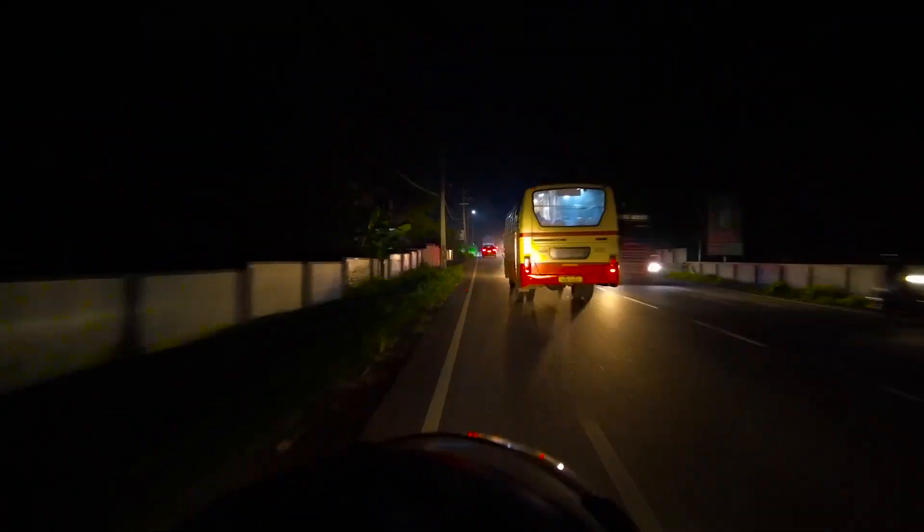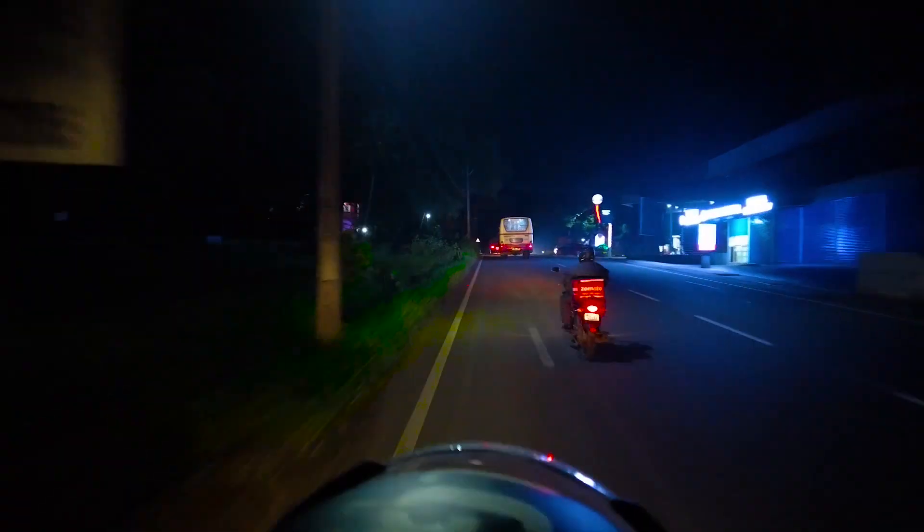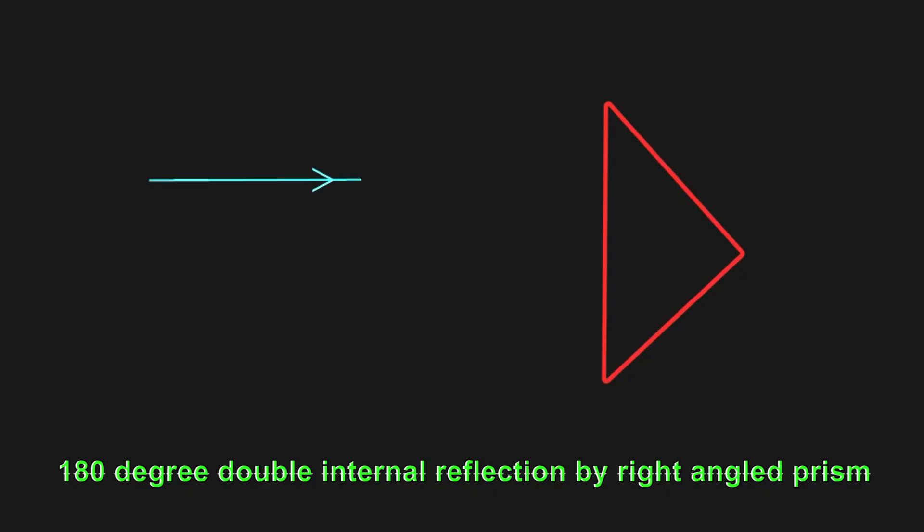The phenomenon of double reflection, as seen in prisms, reflectors, and signboards, occurs due to the process of total internal reflection within these objects. The light undergoes multiple internal reflections, enabling the redirection of light in a specific way, resulting in the formation of clear and visible images or signs.